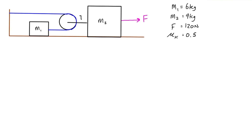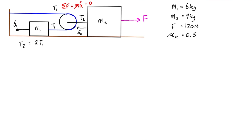In the black cable we'll have a tension T2, and in the blue cable another tension T1. Because the pulley is massless, inertialess, and frictionless, the tension is the same on both sides — that's T1. Taking a sum of forces across the pulley equals mass times acceleration, but mass is zero, so the sum of forces equals zero. That means T2 must equal two times T1, since there are two T1s on one side and one T2 on the other. Equivalently, T1 equals one-half T2.